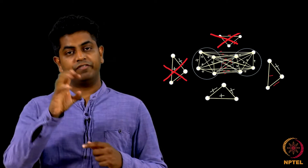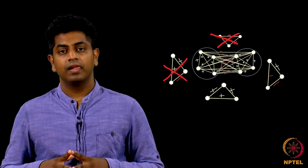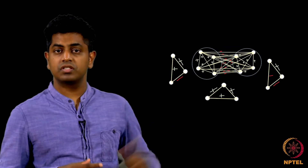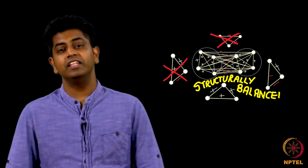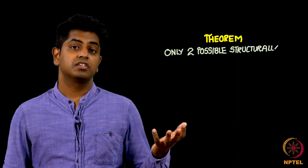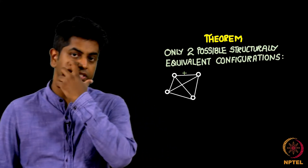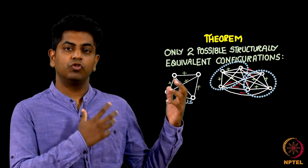Now, if I give you a graph G and call it structurally balanced, how will it look like? Will it look like all positives, or only two teams with positives inside and negatives across? Is there a third type? We prove that there is no third type — there are only these two types. Type 1 where there is only one team, Type 2 where there are two teams, and period — nothing else can happen. Here is the theorem which states these are the only two possible structures when a given network is structurally balanced. Let us try proving this now with good rigor.